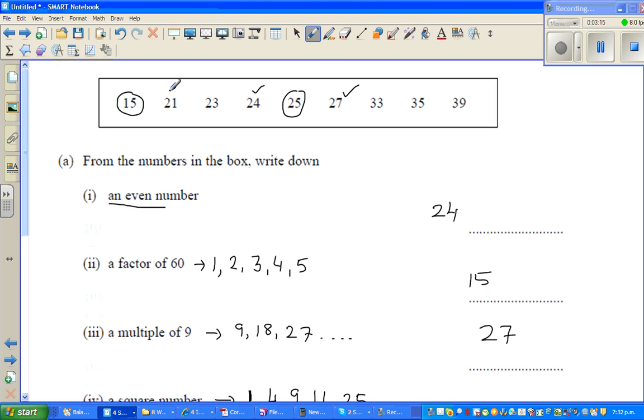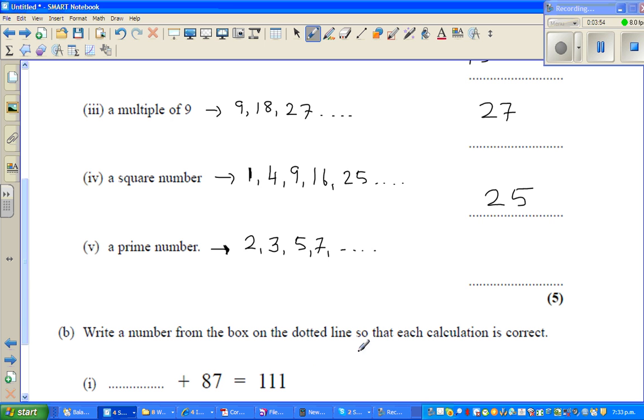21 is not prime because it's divisible by 3 and 7. 23 is a prime number. 24 is not prime - all even numbers except 2 are not prime numbers. This is not prime because it's divisible by 5, this is divisible by 3 and 9, and so on. So 23 is only divisible by 1 and 23, making it the prime number in this group.